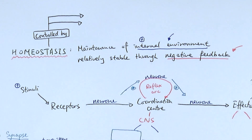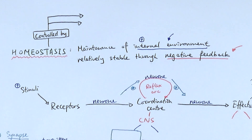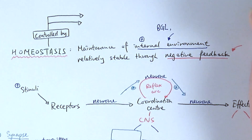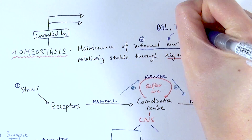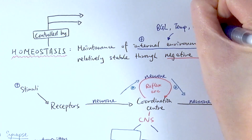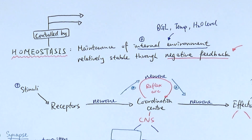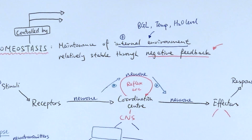Homeostasis is the maintenance of the internal environment relatively stable through negative feedback. The internal environment refers to changes within our body — for example, blood glucose level, which you'll need to know in more detail in the next chapter, body temperature, and water levels, which you'll need to know in more detail if you do the separate course. These are the three specific examples of homeostasis you need to be aware of.